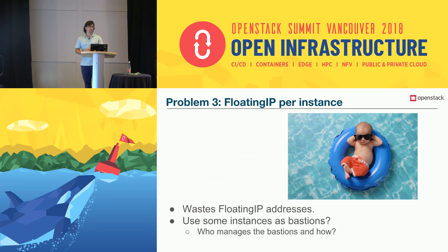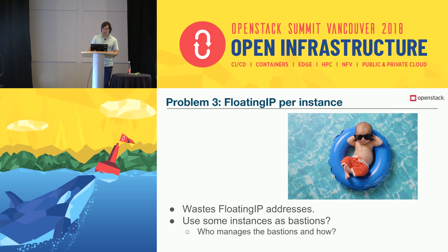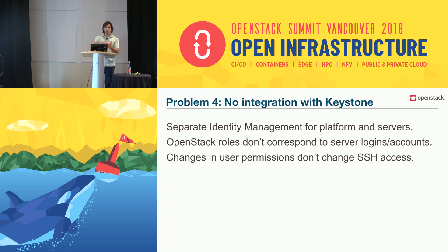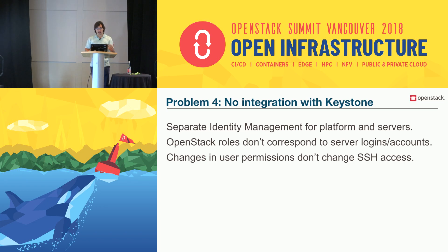With floating IPs, every VM needs one and we have IP exhaustion. So we use IPv6, but not everyone is ready for that, so you use bastions. Bastions are a good way to avoid floating IP use, but who manages the bastion? And finally, there's the question of integration with Keystone. If you're a small company using a public cloud, how do you match the identities in your cloud with accounts on your servers? If you change permissions in the cloud, shouldn't that be reflected on the servers?